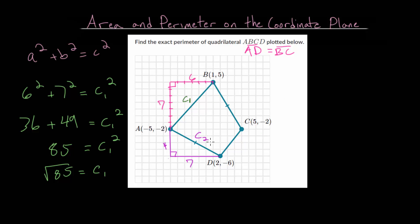So to find c2, we're going to set up another relationship of the side lengths using the Pythagorean theorem. So we get that 4 squared plus 7 squared is c2 squared. This is 16 plus 49 is c2 squared.